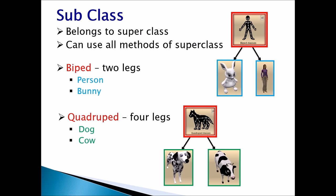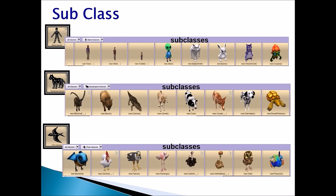You have been using these classes since we began Alice programming. Now subclasses — as per the definition, we know that a subclass belongs to a superclass. For example, biped is a superclass and we have all these subclasses which have two legs, so they are biped. We have new teen, new child, new toddler, alien, bunny, etc. as subclasses.